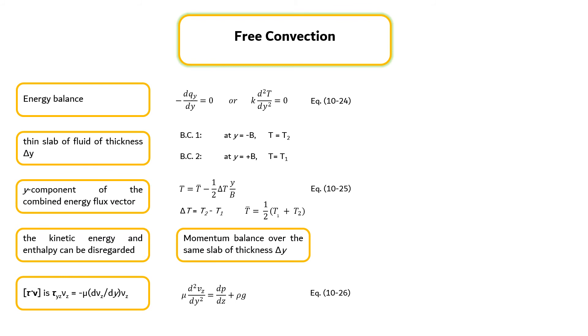The phenomenon of free convection results from the fact that when the fluid is heated, the density usually decreases and the fluid rises. The mathematical description of the system must take this essential feature of the phenomenon into account. Because the temperature difference delta T equals T2 minus T1 is taken to be small in this problem, it can be expected that the density changes in the system will be small. The coefficient of volume expansion is defined by equation 10-27.